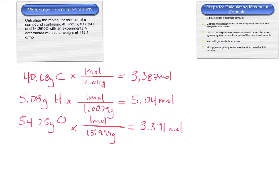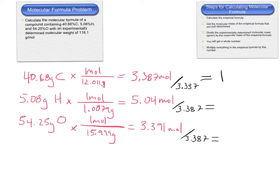The next step is to divide by the smallest number. The smallest is 3.387, so we divide all values by that. 3.387 divided by itself is 1; 5.04 divided by 3.387 is 1.5; and 3.391 divided by 3.387 gives 1 again. Since we have that 1.5, we can't use those values directly — it won't be C1H1.5O1. We need whole numbers, so we multiply everything by 2, because that gets the 1.5 up to 3.